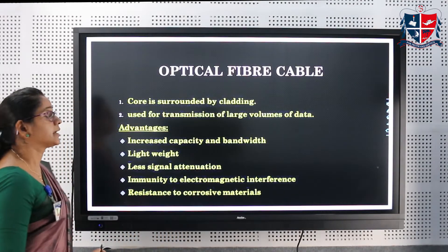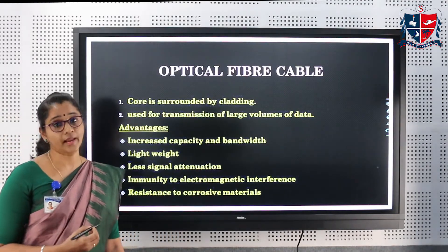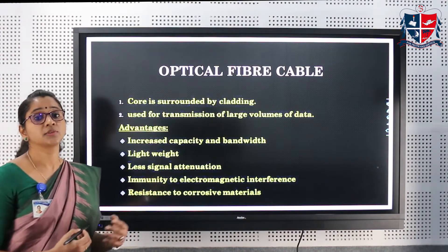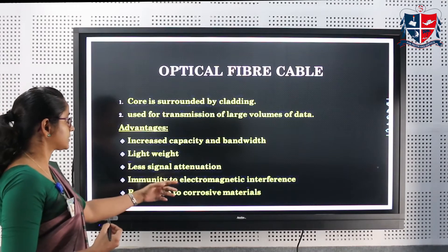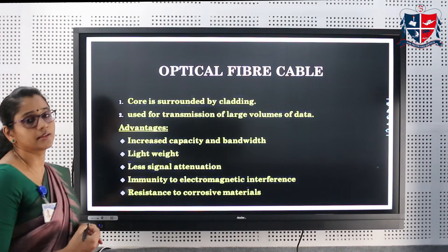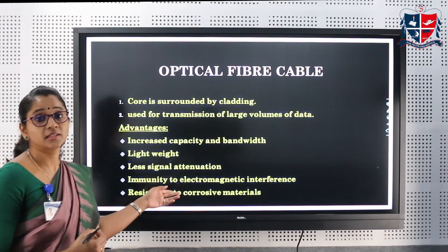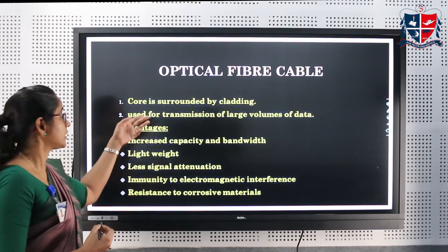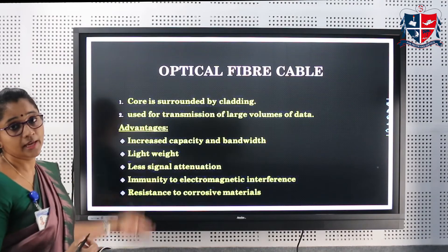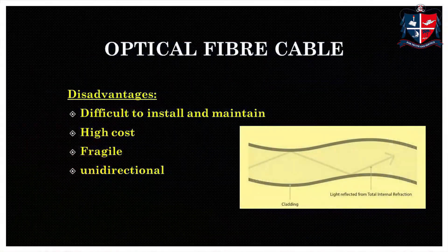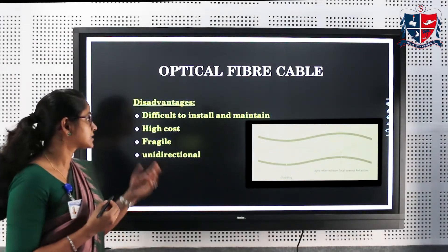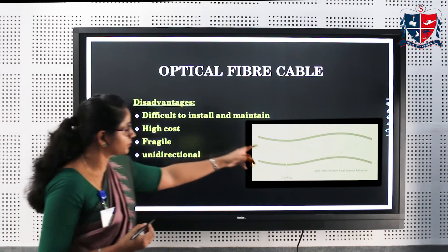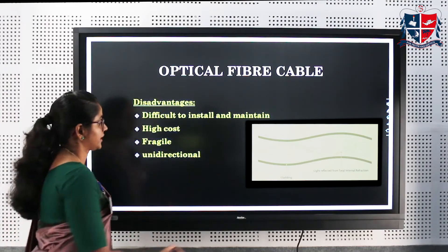Optical fiber cable: here the core is surrounded by a cladding, and it can be used for transmission of large volumes of data. Advantages include increased capacity and bandwidth, light weight, and less signal attenuation. In the case of UTP it has attenuation, so attenuation can be overcome with the help of optical fiber cable. Disadvantages include high cost and difficulty to install and maintain. The diagram depicts the optical fiber cable.